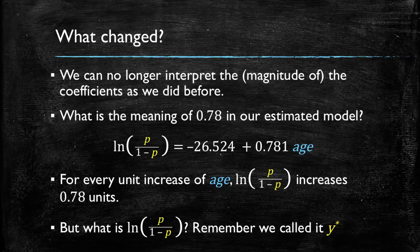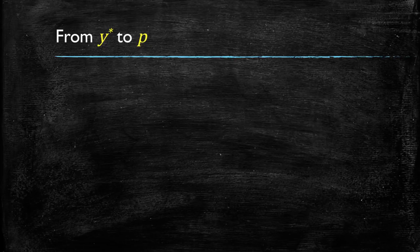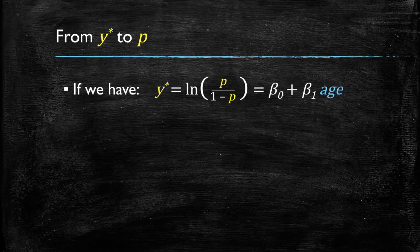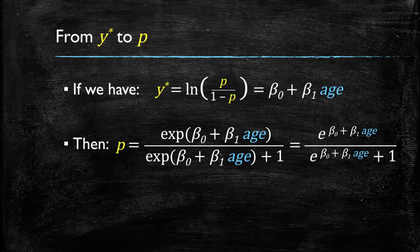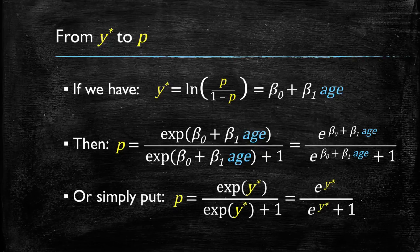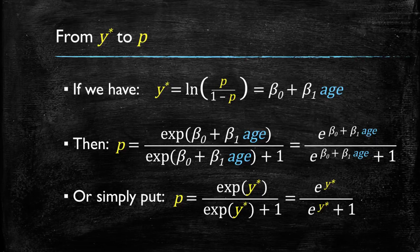Remember that we had called this y-star as well. Let's see if we can convert this y-star into a p. We have that y-star is equal to the log of p over 1 minus p, which in turn is equal to the expression of the beta zeros and the x's, the independent variables. Recalling how we had transformed the probability, we have that the expression of the betas times x's over that same expression plus 1 was equal to the probability. Or simply put, since that expression is equal to y-star, we can say that p, the probability, is the exponent of y-star divided by the exponent of y-star plus 1. I am now going to show you an example in Excel in which we convert the y-stars into probabilities.